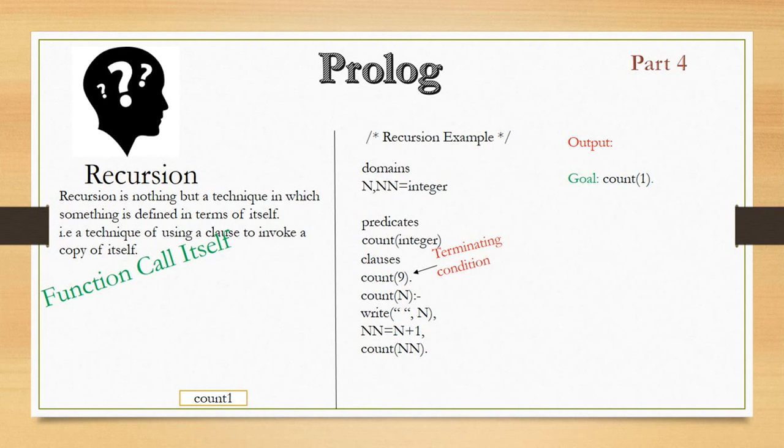In the next line, to make this count(1) true, there is a next instruction, write(n). And I have already stated that the write function, or the write predicate, is always by default true. So that means this statement will definitely be executed. So count(n), the n has been bound with a value called 1, so it will print the value in the output as 1. Then next line is nn = n + 1. So n is 1, so 1 + 1, so nn now will be equal to 2. So here the count will make it 2.